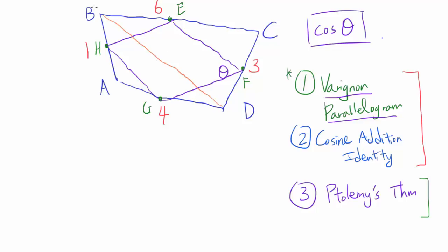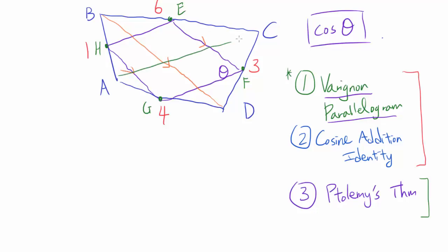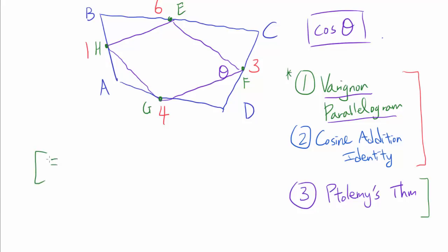How do we know EFGH is a parallelogram? Consider diagonal BD. EF is a mid-segment of triangle BCD, so EF is parallel to BD. Using the same reasoning for triangle ABD, GH is the mid-segment of triangle ABD, so GH is parallel to BD. That establishes that EF and GH are parallel. You can do the same thing with diagonal AC to show that HE and GF are parallel. So we do indeed have a parallelogram, and it turns out the area of this Varignon parallelogram is one-half the area of the original quadrilateral ABCD.